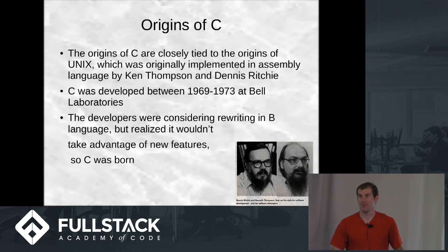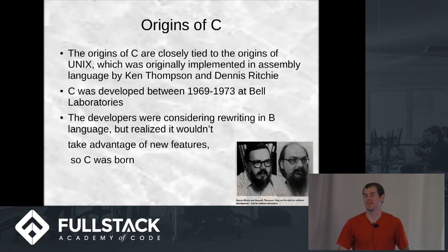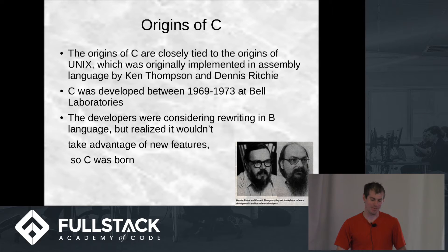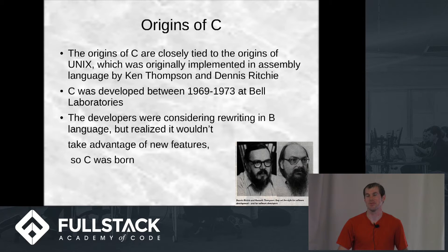Originally Unix was written in assembly language, but they wanted to rewrite it with an actually high-level programming language. So they were going to use B, which was one of the languages at the time, but they realized it wouldn't take advantage of some of the new features that their computer had, so they decided to come up with this whole new language called C in order to rewrite Unix.